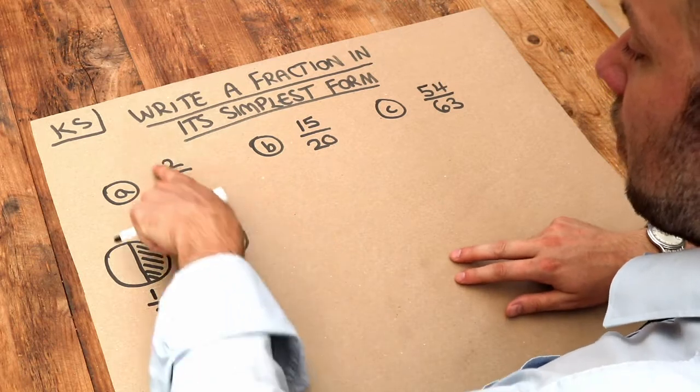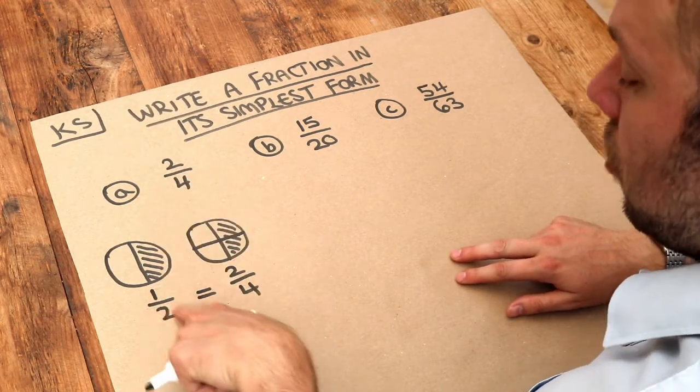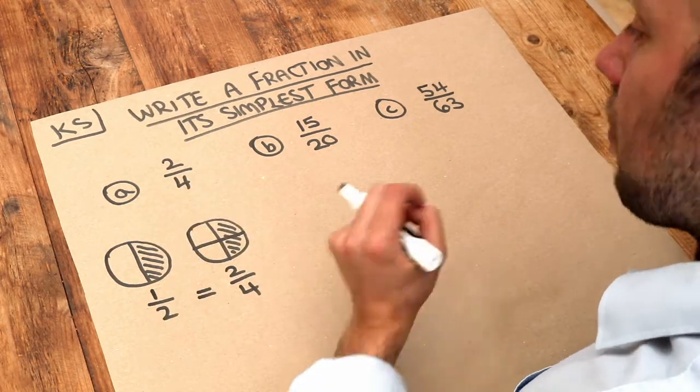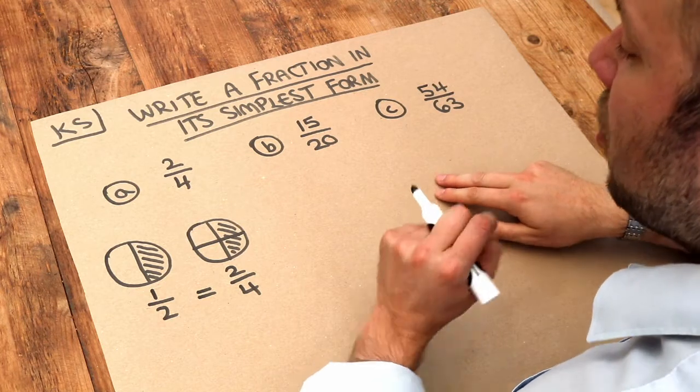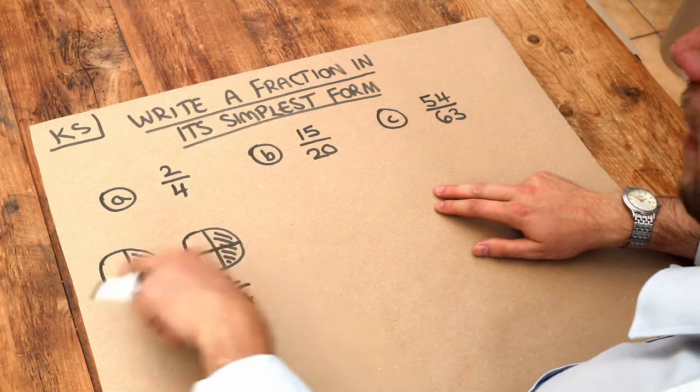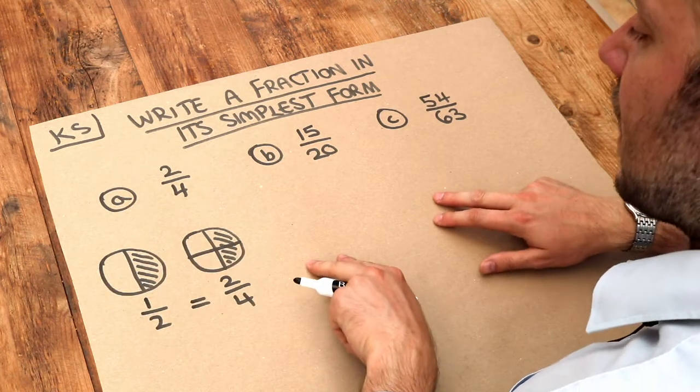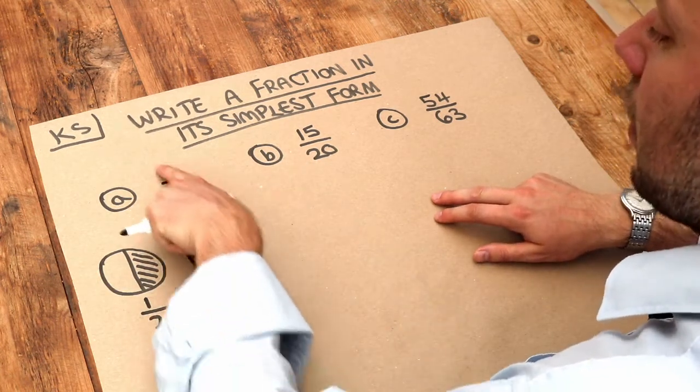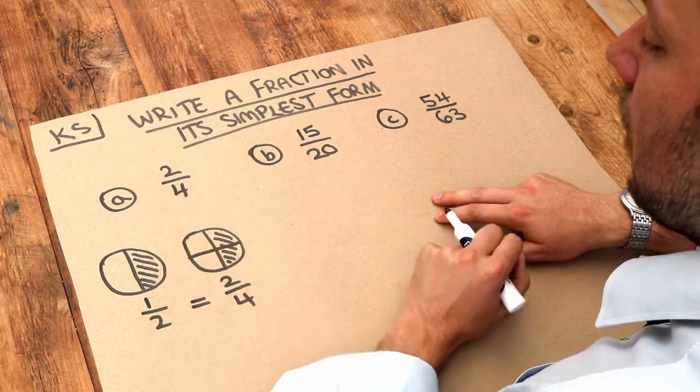We can see we can simplify 2 over 4 to 1 over 2. To write a fraction in its simplest form means you want to make the numbers as small as possible. The way to do it without having to draw diagrams is to identify the biggest number you can divide 2 and 4 by.